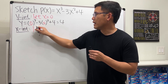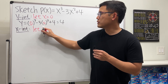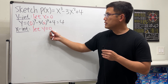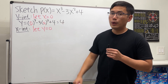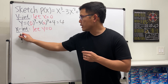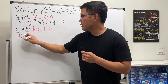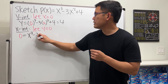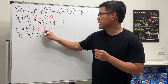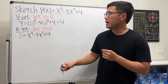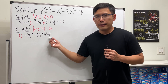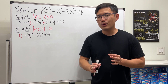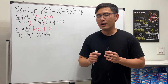Next, for the x-intercept, it's slightly more difficult. The first step is we let y equal zero, so we set zero equal to x³ - 3x² + 4, and we have to solve for x.